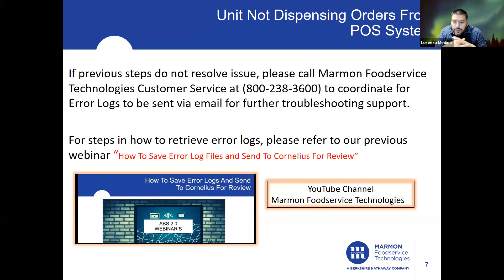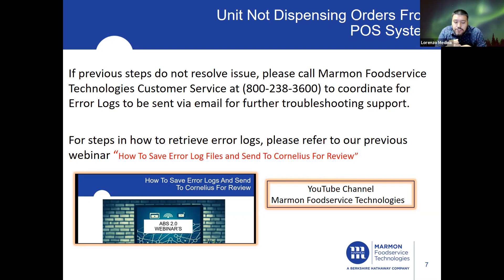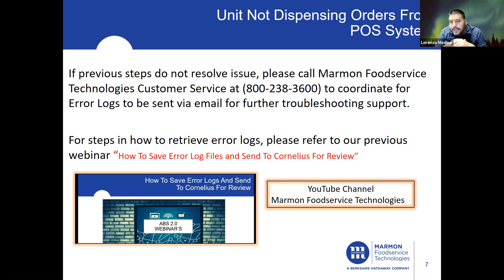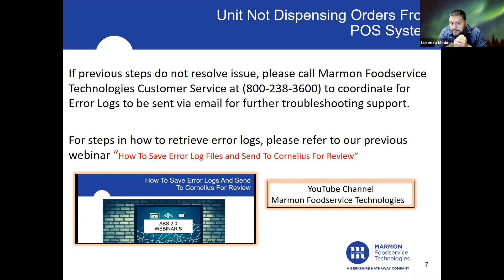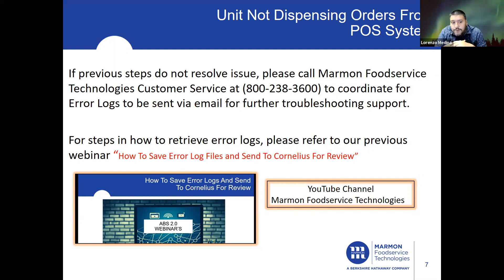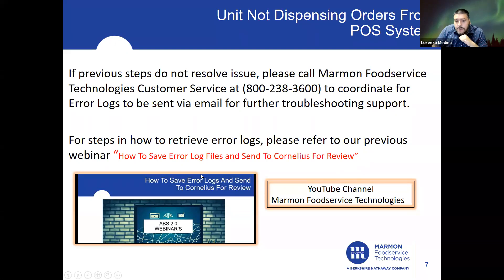If you have checked all previous steps — verified the IP address is correct, operational status is up, and confirmed there's no bad rear Ethernet adapter — then call Marmalink at 1-800-238-3600. That's our Marmalink customer service support. They'll be requesting you to send error logs via email for further troubleshooting support. To retrieve error logs off the ABS 2, please refer to our previous webinar on how to export error log files and send to Cornelius for review. That video can be found on our YouTube channel.